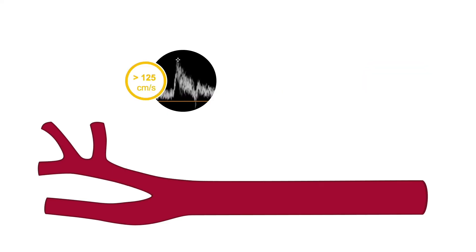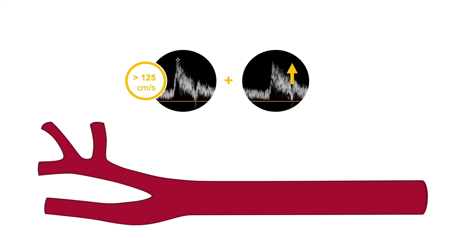In the ICA, peak systolic velocities greater than 125 cm a second and increased diastolic velocities indicate the presence of significant disease. It is important to walk the Doppler sampling volume through the area of stenosis to ensure that the highest velocities are detected, which may occur in a jet just distal to the stenosis.